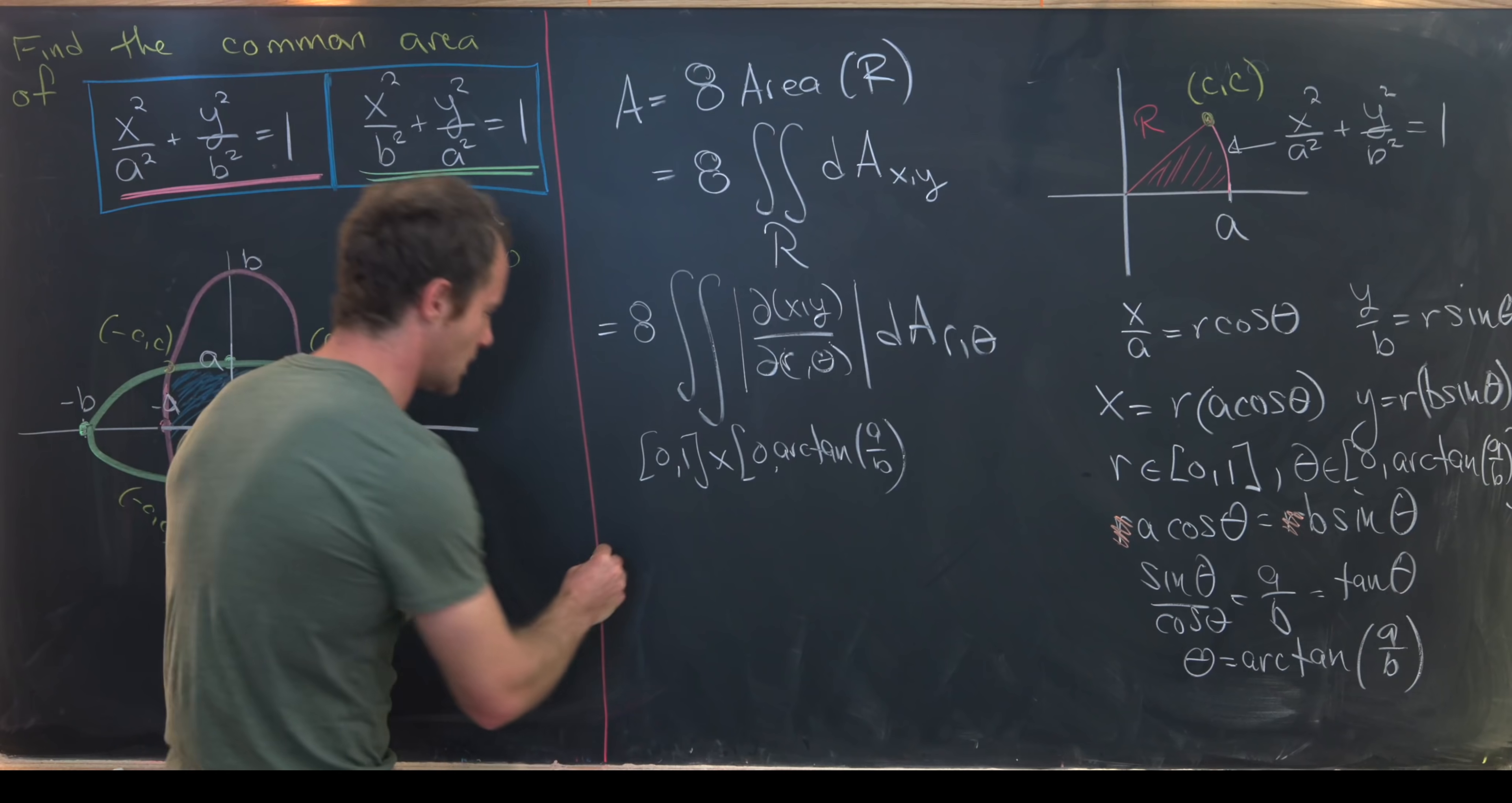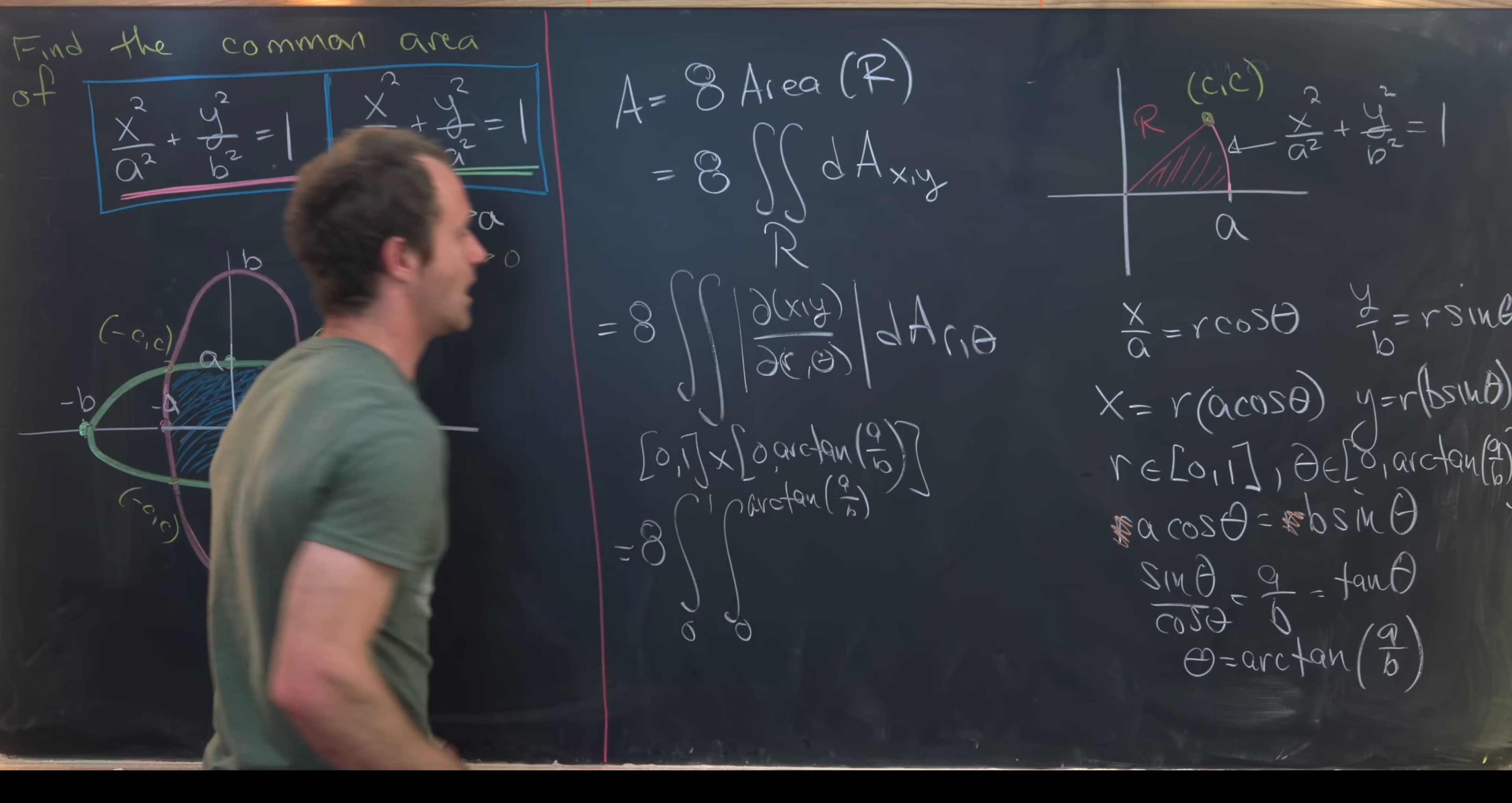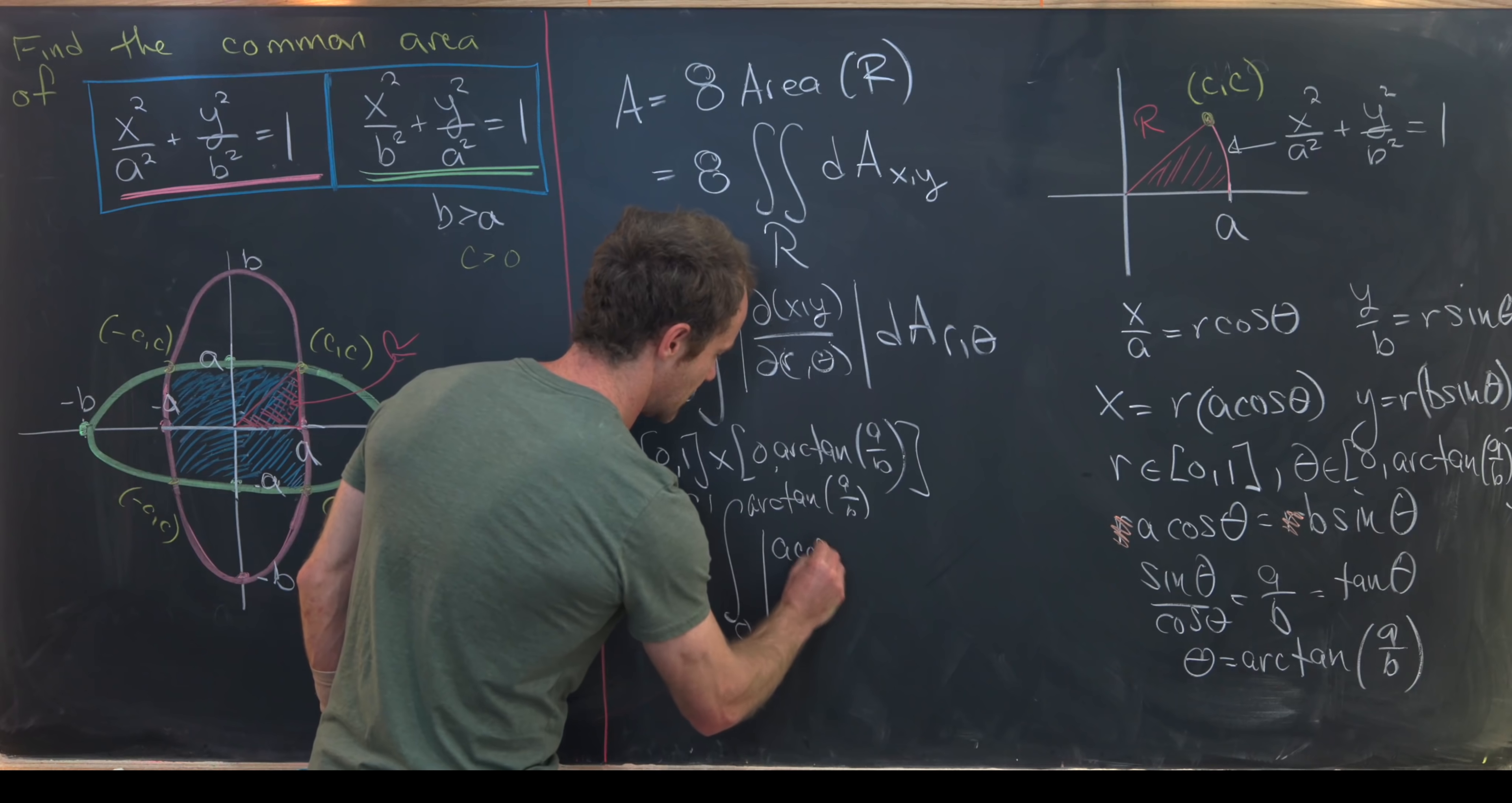So that gives us 8 times the integral from 0 to 1, the integral from 0 to arc tan of a over b. Let's recall what this is. This is the derivative of x with respect to r in this spot. So that's going to be a cos theta. And then here we have the derivative of y with respect to r, which is b sine theta.